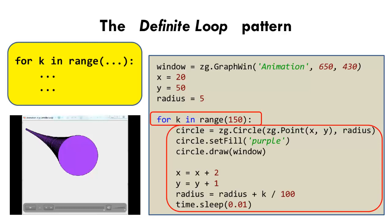A definite loop — that is, a for loop — works fine if you want the loop to run a certain number of times. But what if you want the loop to run until some condition is met, that is, until some event occurs? For example, suppose that you want the circle animation to run until the circle grows too big for the window. Then you need the wait-until-event pattern.